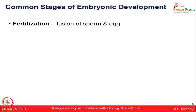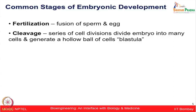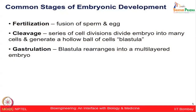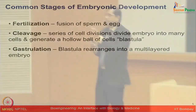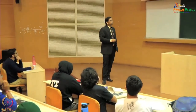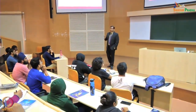Before coming to the actual developmental cycle, let us familiarize ourselves with some terminologies. Fertilization is the process of fusion of sperm and egg. Cleavage is when a series of cell divisions happens — the fused cell divides to 2, 4, 8, 16, 32, 64, then morula, blastula, gastrula. All those divisions are part of cleavage, eventually generating a ball of cells known as blastula.